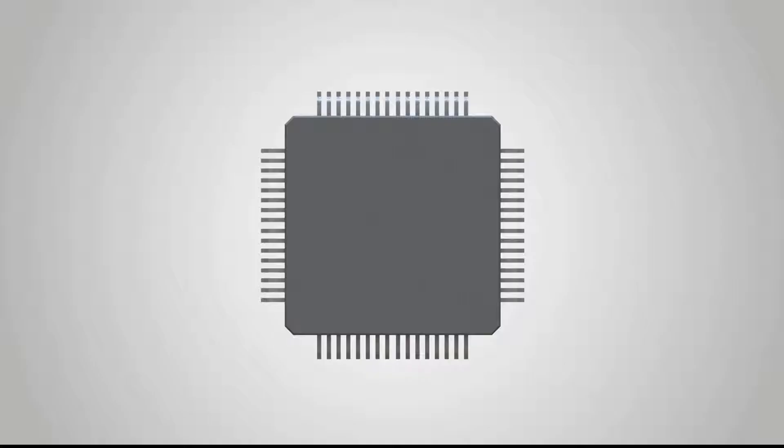A microcontroller is also called a single-chip microcomputer, which can be understood as a simplified version of a computer. The microcontroller is mainly composed of three parts: CPU, memory, and I/O interfaces.